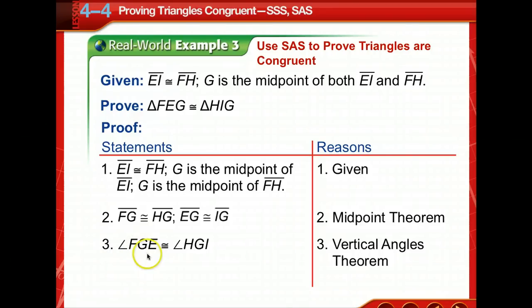Angle FGE is congruent to angle HGI. Notice we're using three points, three different vertices to label that angle, because G is common for both triangles, and if you notice, those are vertical angles. So now we've got a side, and we've got an included angle. So here's two sides in the included angle, so by congruent SAS, side angle side. Triangle FEG is congruent to triangle HIG.